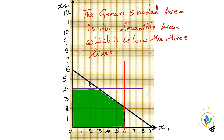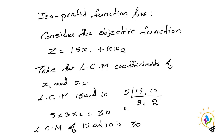The feasible area has some corner points. Up to identifying those corner points, the extreme point method and ISO profit method follow the same procedure. From here, the procedure changes and I will now discuss the ISO profit method.